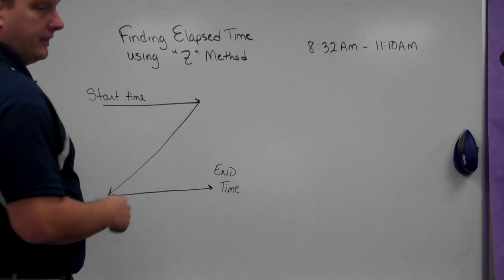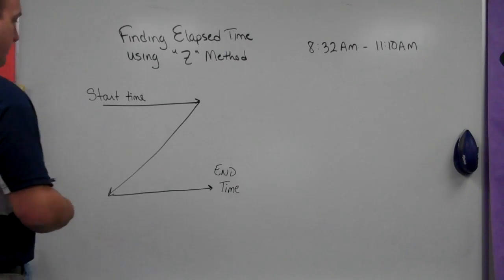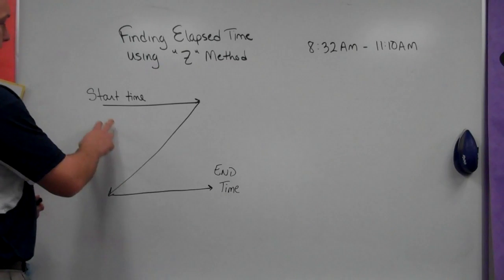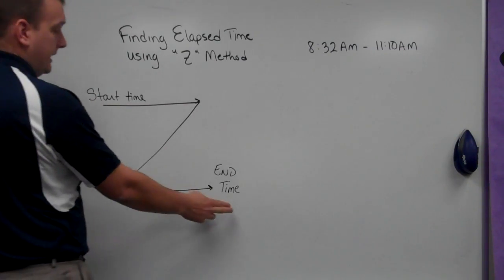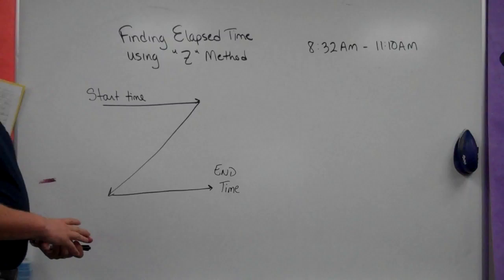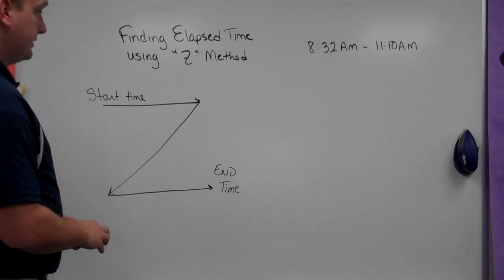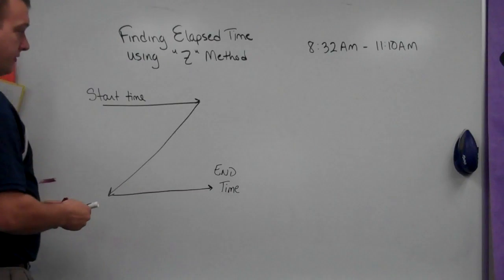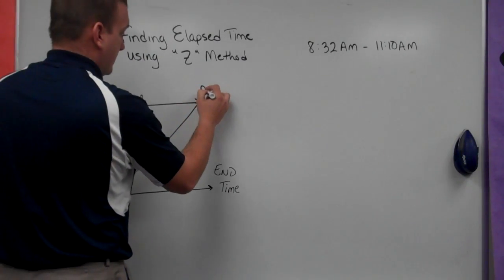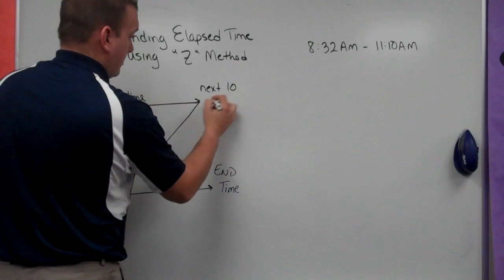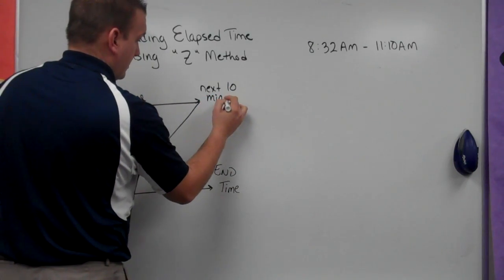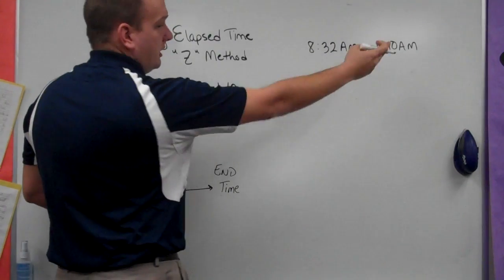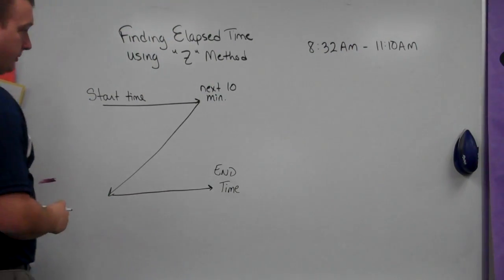Now the Z method makes finding elapsed time very easy. We've been talking about how to tell time in the previous lessons, but with the Z method, you have a start time and an end time, and we make this Z pattern that lays out the steps for us to find how much time has passed. For our start time, we want to move from there to the nearest or the next 10 minutes, the next 10 minute mark. For instance, I would go from 8:32 to 8:40, which we'll see in our example.